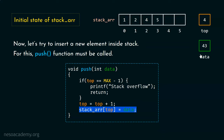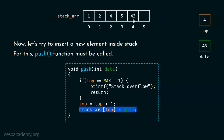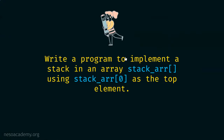Let us assume that data holds the value 43, and we want to insert this value at the current position. Because top is four, this is going to be our topmost element. So here we store the value 43, and this is how our stack looks. Top is four, which means this is the topmost element. This is how our push function works. Now, in this presentation, we want to write a program to implement a stack in array stack ARR using stack ARR index 0 as the top element.